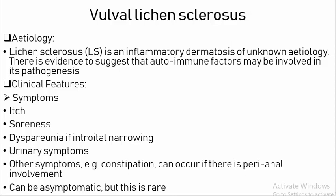Vulval Lichen Sclerosis. Dermatosis Etiology: It is an inflammatory dermatosis of unknown etiology. There is evidence to suggest that autoimmune factors may be involved in its pathogenesis. Clinical Features — Symptoms: Itch, soreness, dyspareunia, urinary symptoms, and other symptoms such as constipation. Can be asymptomatic, but this is rare.